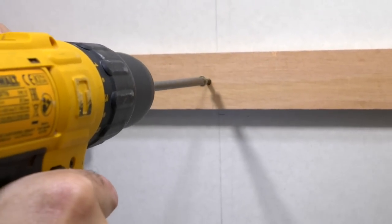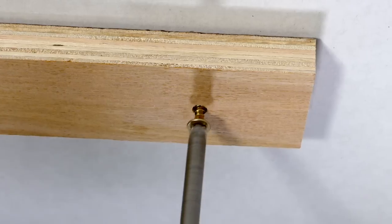Place the battens horizontally at the three heights. Drill through and then fix to the wall with the supplied screws.